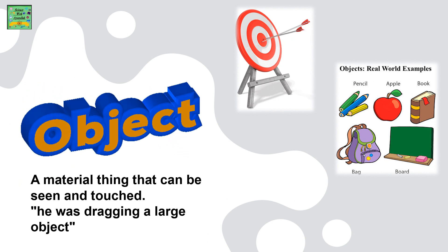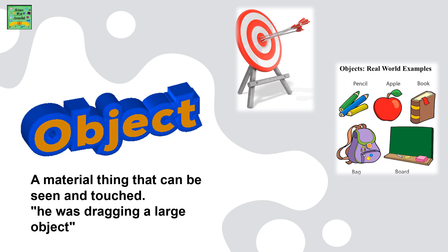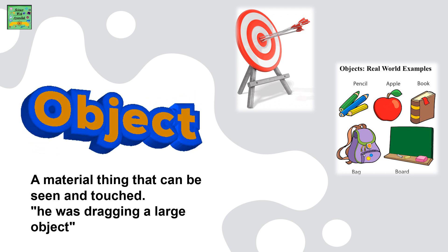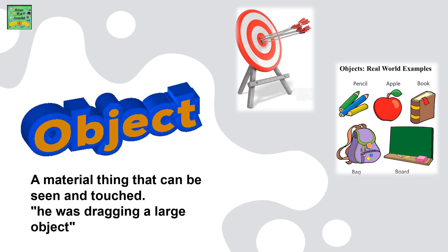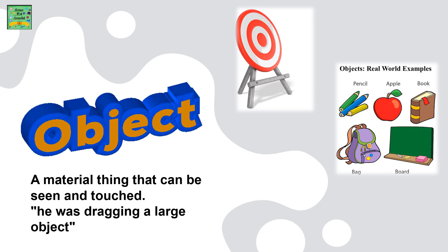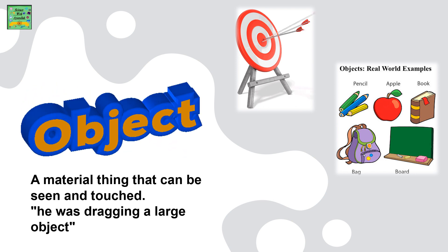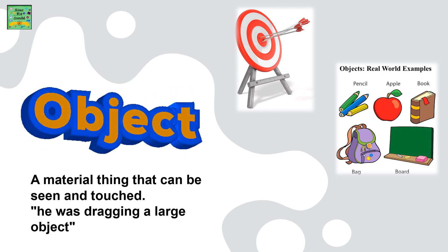Object: a material thing that can be seen and touched. For example, 'He was dragging a large object.' Real-world examples of objects include pencils, an apple, a book, a bag, and a board.